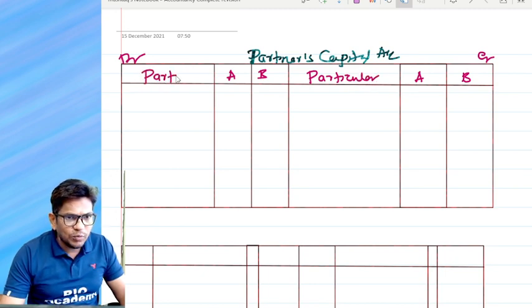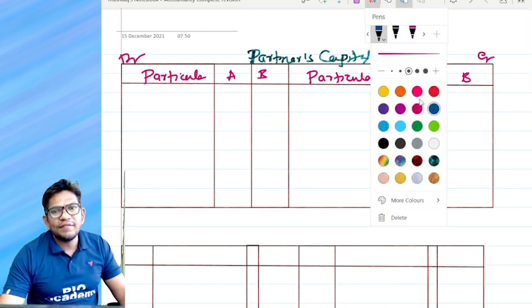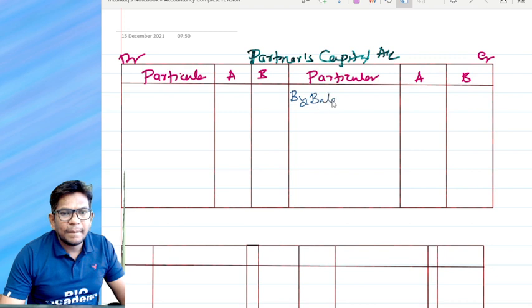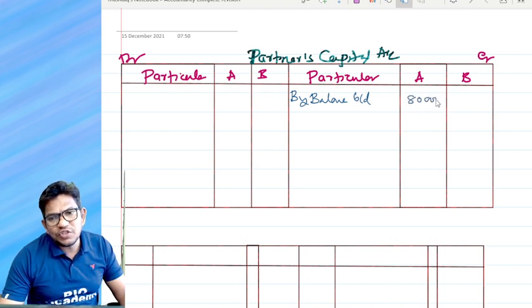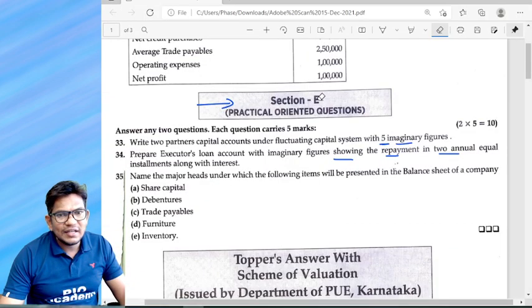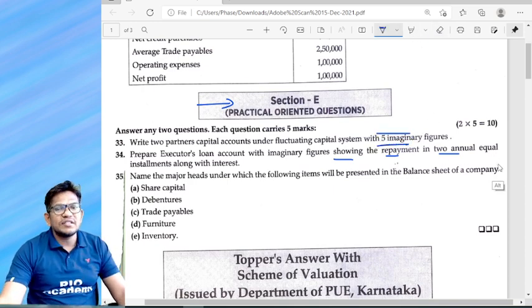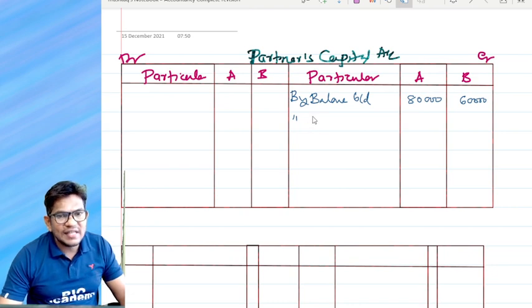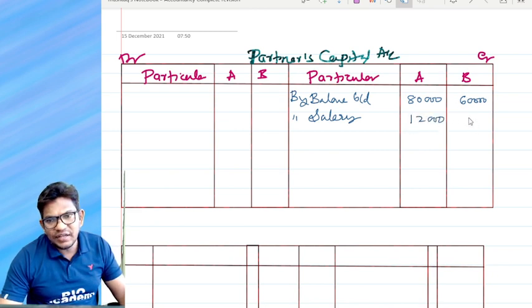We have a very important part. First is, we take by balance brought down. Assume you take any number which you assume. I have taken 80,000 and 60,000. They said five imaginary figures, correct? Five imaginary figures. Just do this now. By balance brought down: 80,000 and 60,000. By salary, take it anything like 12,000 and 8,000.